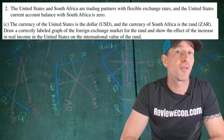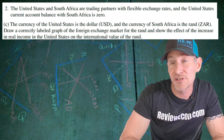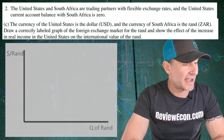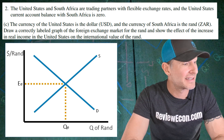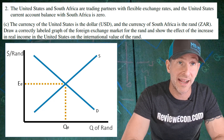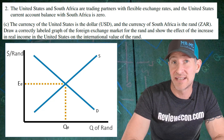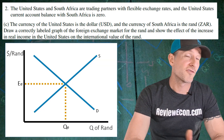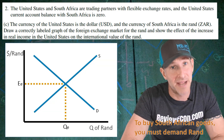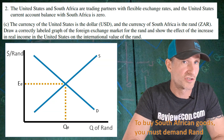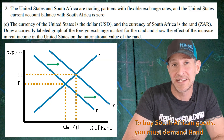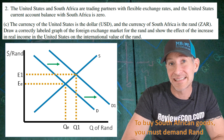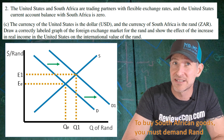For part C, we're going to graph the foreign exchange market for the South African RAND compared to the United States dollar and show the impact of the increase in exports from South Africa. We label the axes with the quantity of RAND on the x-axis and the exchange rate, which is dollars per RAND, on the y-axis. We have a downward sloping demand curve, upward sloping supply curve, and the equilibrium exchange rate and quantity marked. Now in order for Americans to buy South African goods, they have to demand South African RAND. So that's going to shift the demand curve to the right, increasing the equilibrium exchange rate and the equilibrium quantity of RAND. You get one point for the properly labeled graph and a second point for the shift showing the increase in the equilibrium exchange rate.